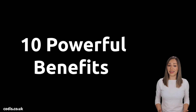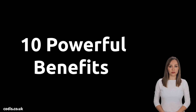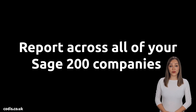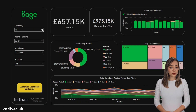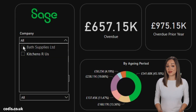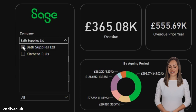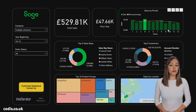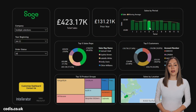But what makes IntelliRator so powerful? Here are 10 answers. Report across all your Sage 200 companies — view the totals or filter to specific companies. Dynamic filtering: filter your reports by clicking on any chart you see.